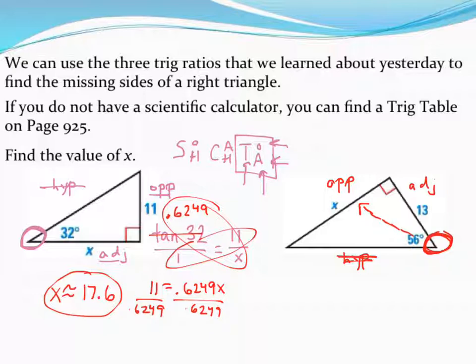Look at SOHCAHTOA and figure out what part we need to use. I'm working with the opposite side and the adjacent side. So find the part of SOHCAHTOA that uses O and A, and again, you're going to see that it's tangent one more time. Tangent has the O and tangent has the A in it, so I'm working with tangent.